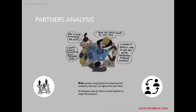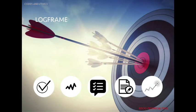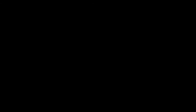A socio-technical tool to put codes of engagement into practice is a partner analysis. A partner analysis aids in identifying key stakeholders, their influence and impact, and can be utilised as a means to find common ground between all parties. Another socio-technical tool is a log frame, which aids in identifying clear and measurable objectives and activities by developers and the community.